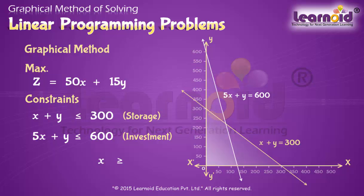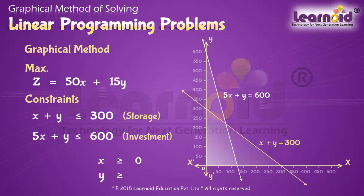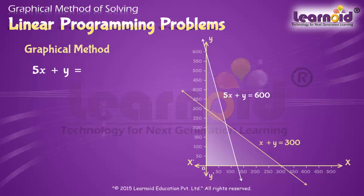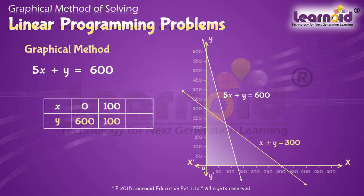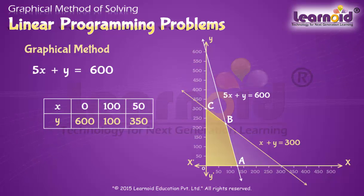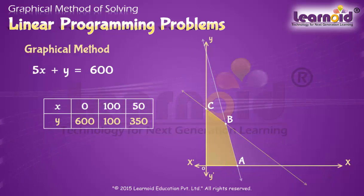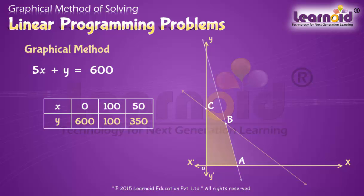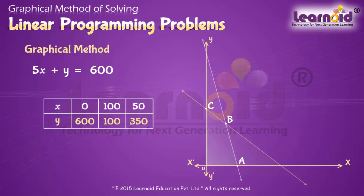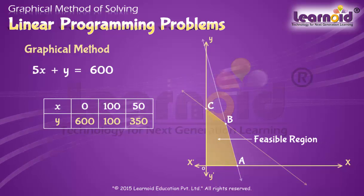The region for X greater than or equal to 0 is above the X axis, and for Y greater than or equal to 0 is towards the right of the Y axis. The graph of this system of inequalities is the region O, A, B, C. Each point in this common shaded region is a feasible solution. The common region determined by all the constraints, including non-negative constraints X ≥ 0 and Y ≥ 0, is called the feasible region or solution region.